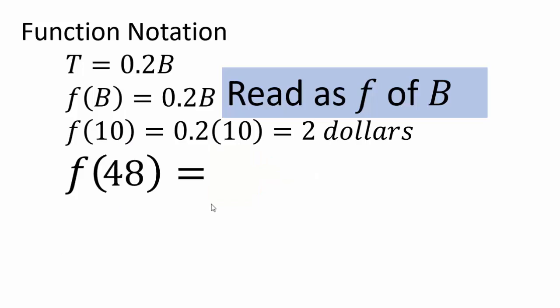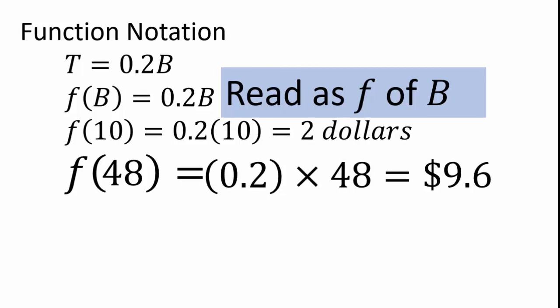All right. Go ahead. Try F of 48 and tell us what it means in your own words, in English sentence. Again, don't wait for me. I can see that you are just waiting for me to give you an answer. Don't do that. Come on. Let's go. All right. Very good. 0.2 times 48 or 9.6. It means that the bill was $48 and that you had to tip $9.60. That is the meaning of F of 48 equals $9.6.